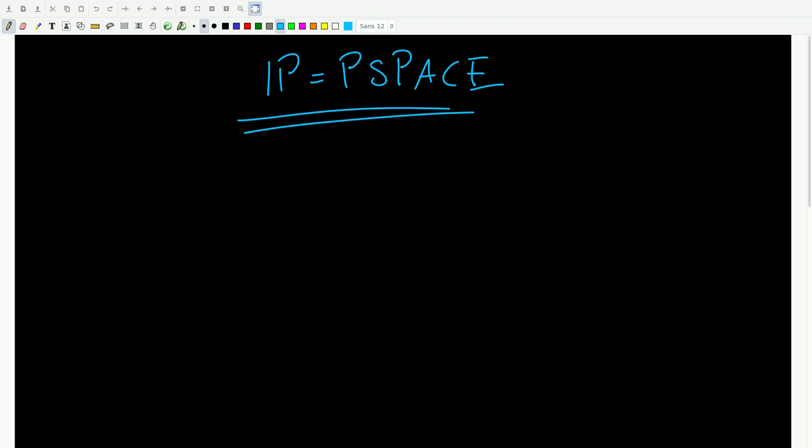This might not sound like much at first, so to really drive the point home, let me restate this one more time in the most grandiose way that I can. IP equals PSPACE means that a brief conversation with God could teach you something that you could never learn from the Bible, even if the Bible was the size of the observable universe. For instance, it's possible to learn whether White has a winning strategy for chess.